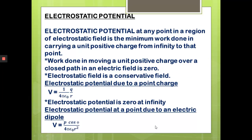Next is electrostatic potential. Electrostatic potential difference refers to work done from one point to another. Electrostatic potential is the minimum work required to carry a unit positive charge from infinity to a particular point. When we consider infinity to a particular point we call it electrostatic potential; between two points we call it electrostatic potential difference. Formally: electrostatic potential at any point is the minimum work done in bringing a unit positive charge from infinity to that point.